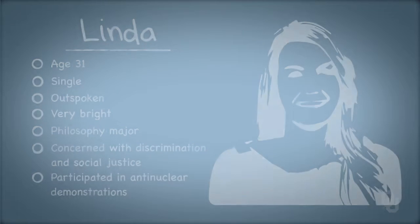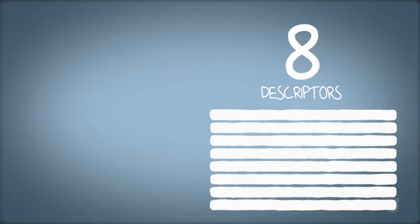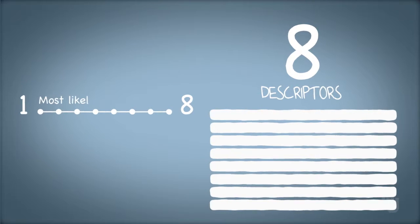The participants were then given a list of eight descriptors for Linda, and they were asked to rank order them from one to eight, from the most likely descriptor of Linda to the least likely descriptor. The eight descriptors were: